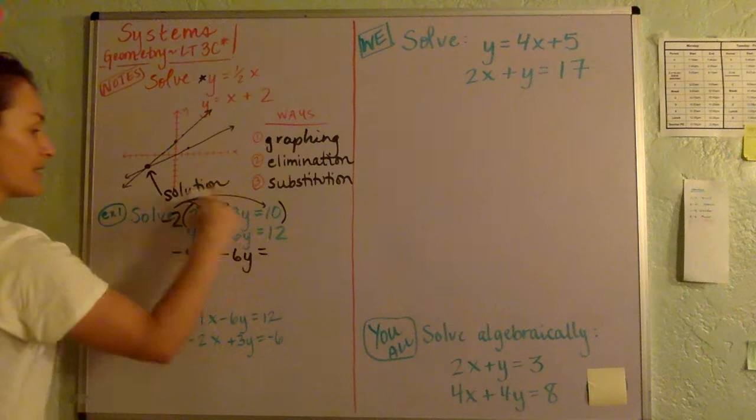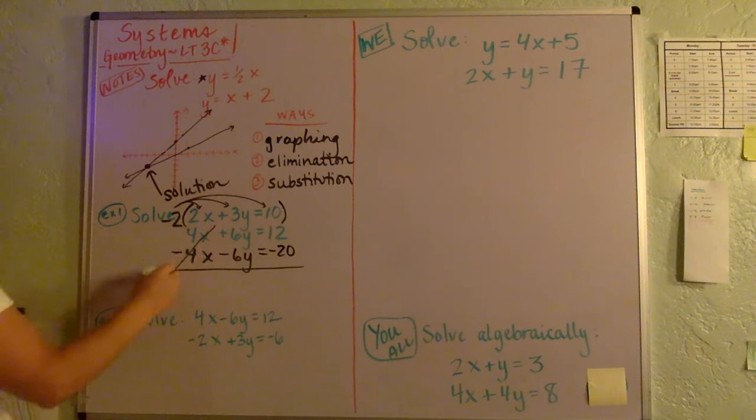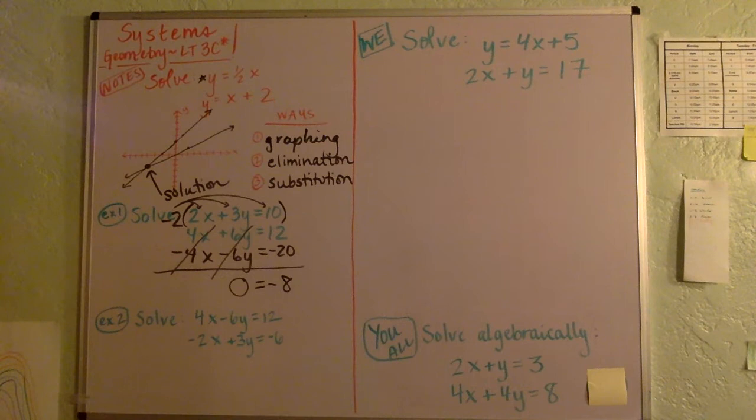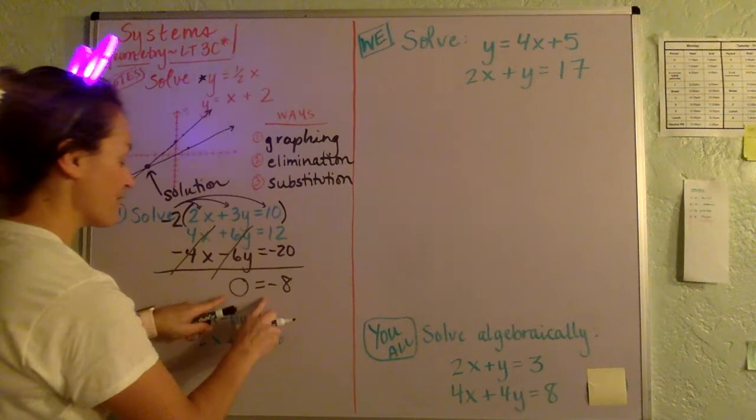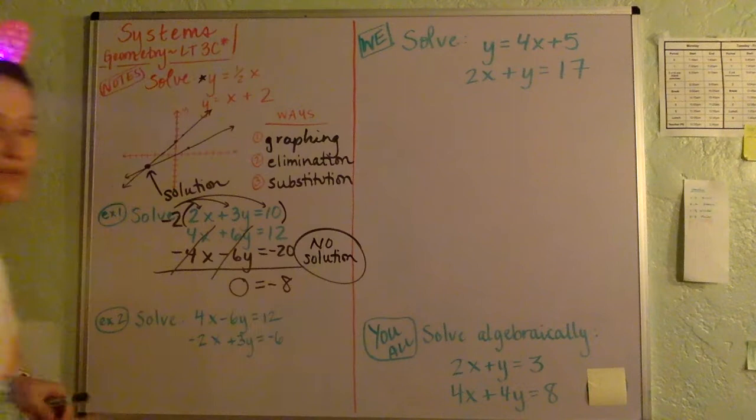And when we add these together in this particular case, you'll notice that all the variables cancel, and we get this result. And so now what this means is that these two lines, when we graph them like we did here, they're never going to cross each other. And so the answer to this, whenever this happens, is no solution. The two lines must be parallel to each other. There's no solution.